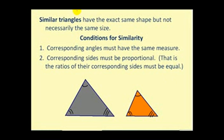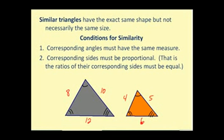For example, if one side is 8 inches long and the corresponding side is 4 inches long, the ratio between these two would be 2 to 1. Therefore, if another side was 10 inches long, its corresponding side would have to be 5 inches, and if a side was 12 inches long, its corresponding side would have to be 6 inches. The ratio stays consistent with the corresponding sides.